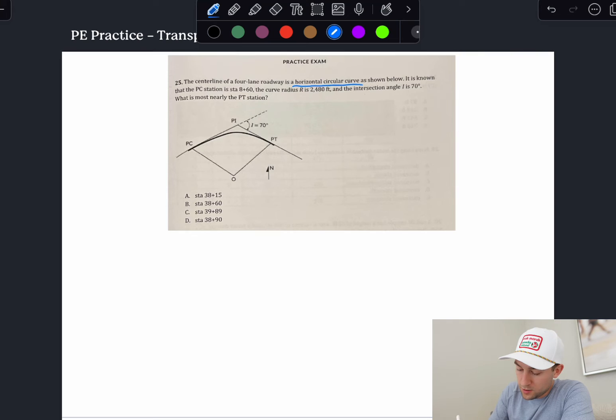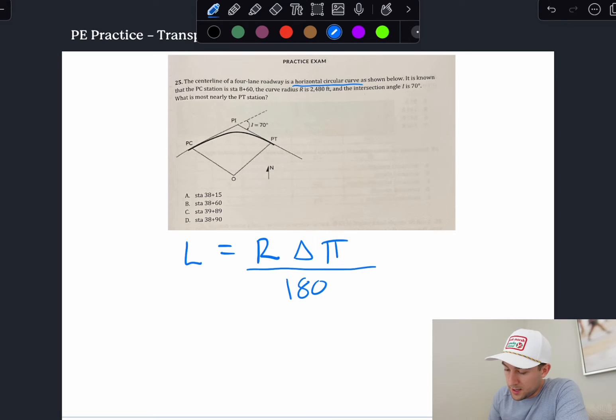So here we have L equals R times delta times pi over 180. So I'm going to take that equation right here equals R delta pi over 180. And let's start figuring out what we need to plug in here. We're given R. R in this equation is that 2,480 feet. What else do we got? Do we have the delta?